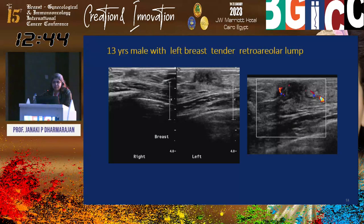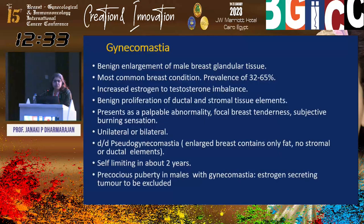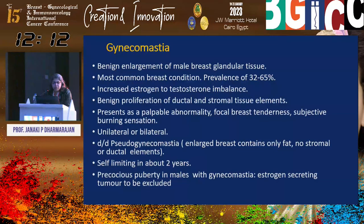A 13-year-old male presented with a left tender retroareolar lump — these kids are very sensitive and we should be aware of what they are undergoing. This was unilateral early nodular gynecomastia where only reassurance was needed. Gynecomastia is benign enlargement of male breast glandular tissue, the most common breast condition with a prevalence of 32 to 65%. It is due to increased estrogen-to-testosterone imbalance, and benign proliferation of ductal and stromal elements can occur. It presents as a palpable abnormality with focal breast tenderness and subjective burning sensation, can be unilateral or bilateral. The differential includes pseudogynecomastia, where there is only enlarged breast with fat and no stromal or ductal elements. In precocious puberty in males with gynecomastia, estrogen-secreting tumors must be excluded.